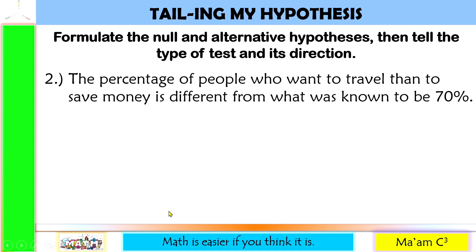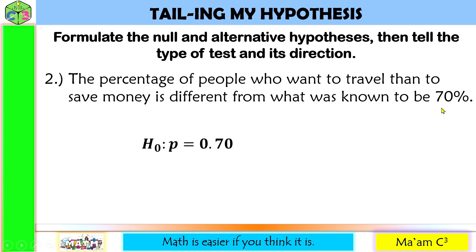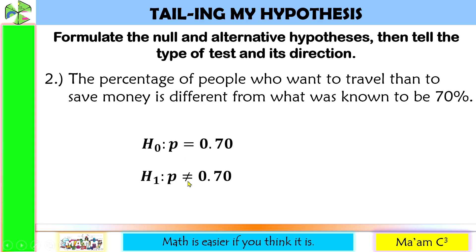The percentage of people who want to travel rather than save money is different from what was known to be 70%. What was known to be will be our population proportion — this will be our null hypothesis: H₀, P is equal to 0.70. The keyword here is different, so our alternative hypothesis is H₁: P is not equal to 0.70. Since this is not equal to, this is a two-tailed test.